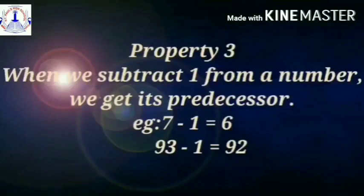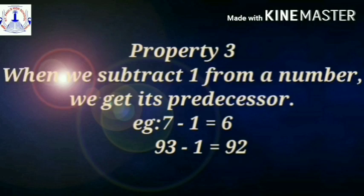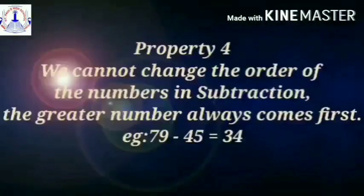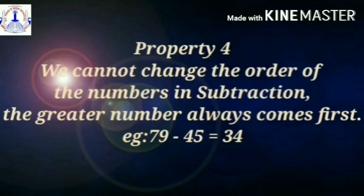Property 3: When we subtract 1 from a number, we get its predecessor. For example, if you subtract 1 from 7, you are going to get the answer 6. 93 minus 1 is equal to 92. Property 4: We cannot change the order of the numbers in subtraction. The greater number always comes first. For example, 79 minus 45 is equal to 34 — that is, you can minus a smaller number from a bigger number. Have you all understood the properties?